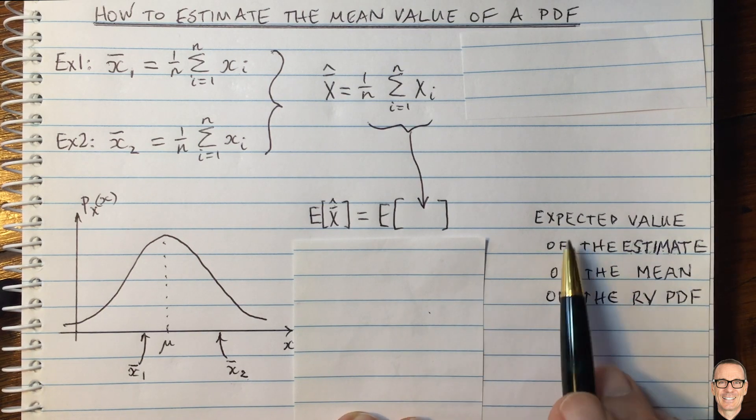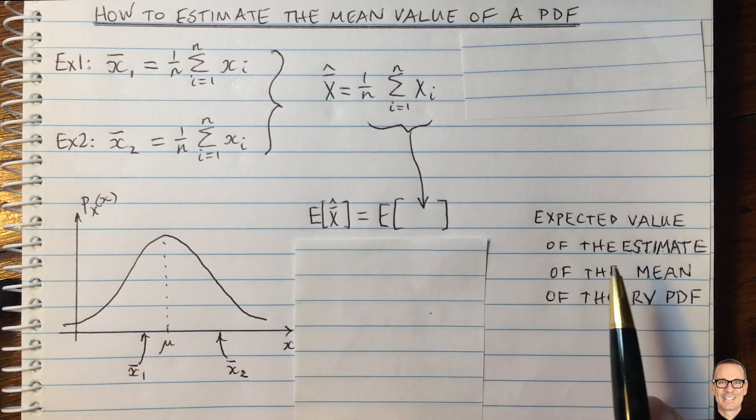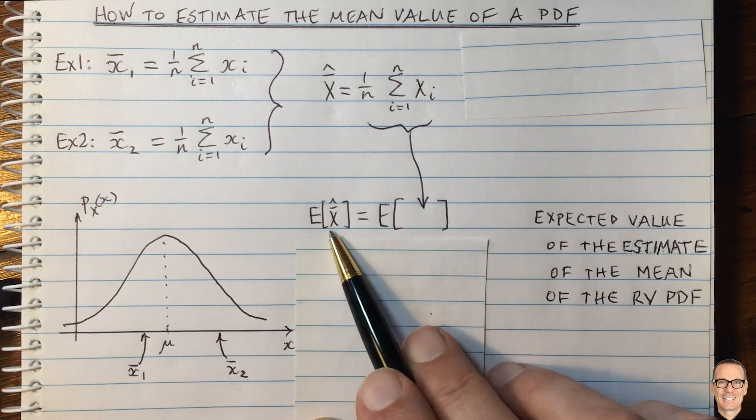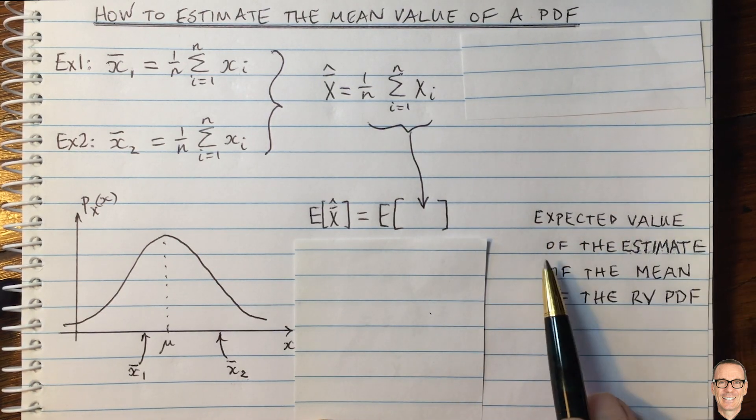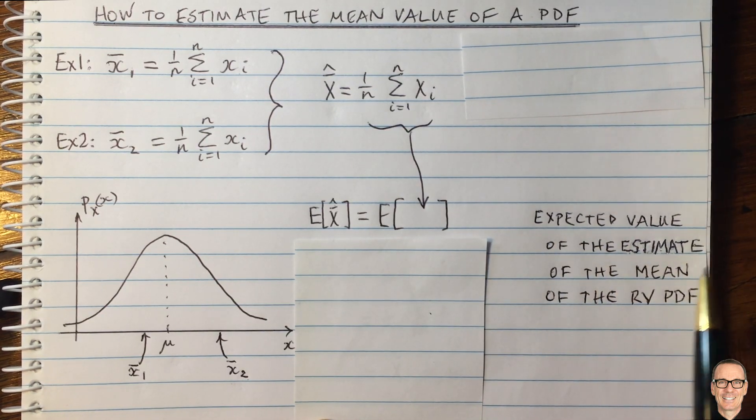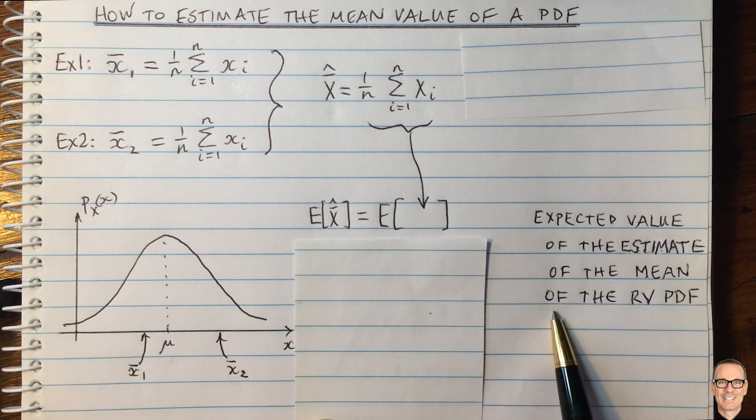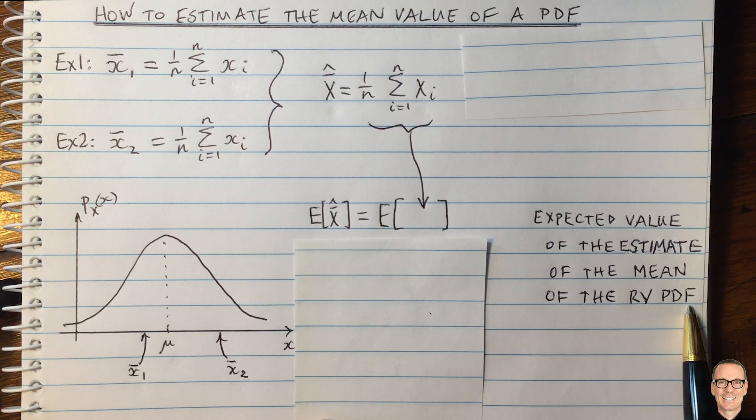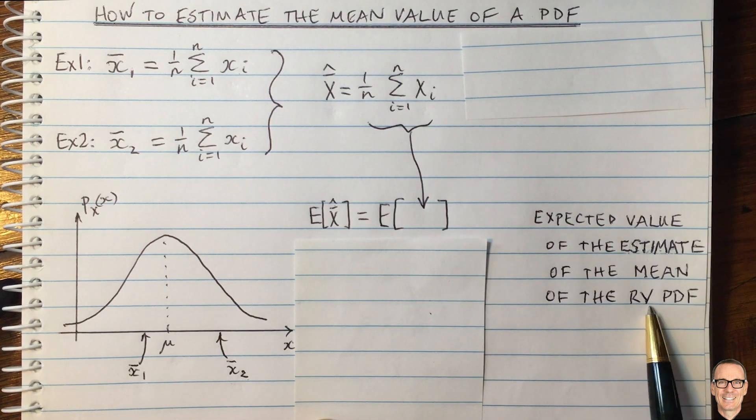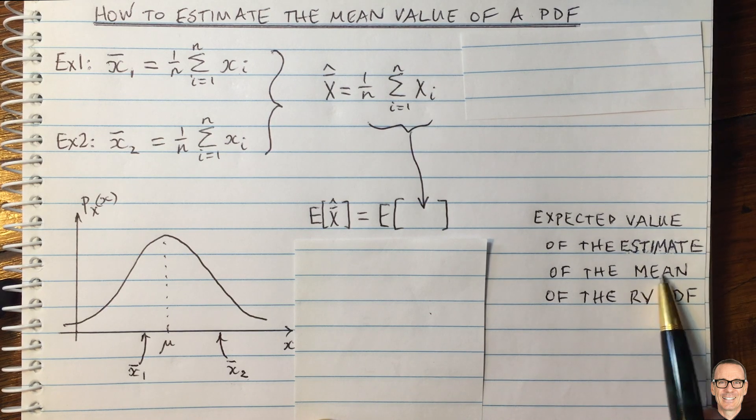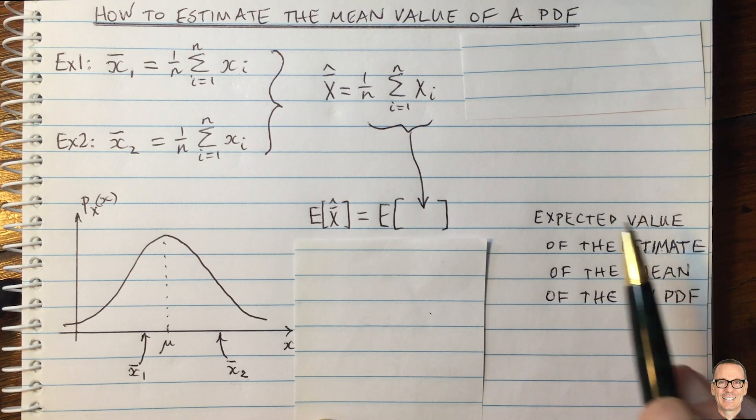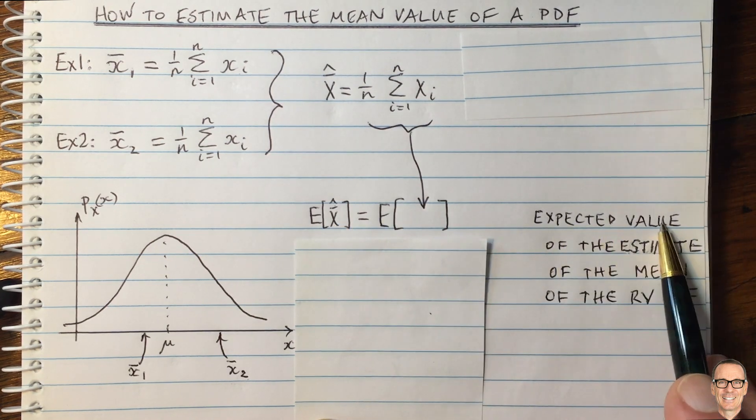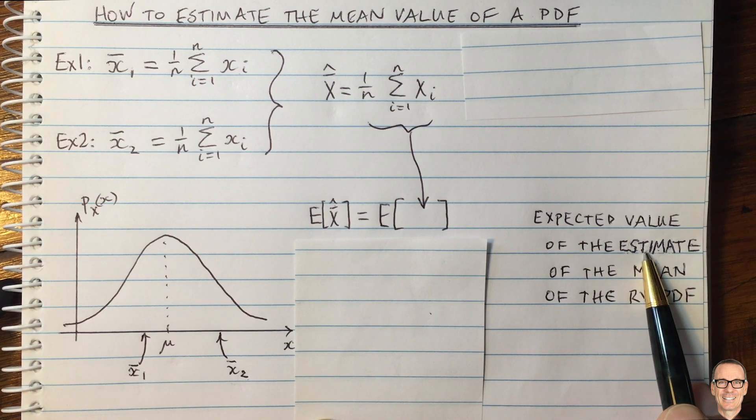let me just write out this in words over here to get our heads around it. This is the expected value of the estimate of the mean of the random variable PDF. The random variable is random. It has a mean. We are estimating that mean. And this is the expected value of that estimate.